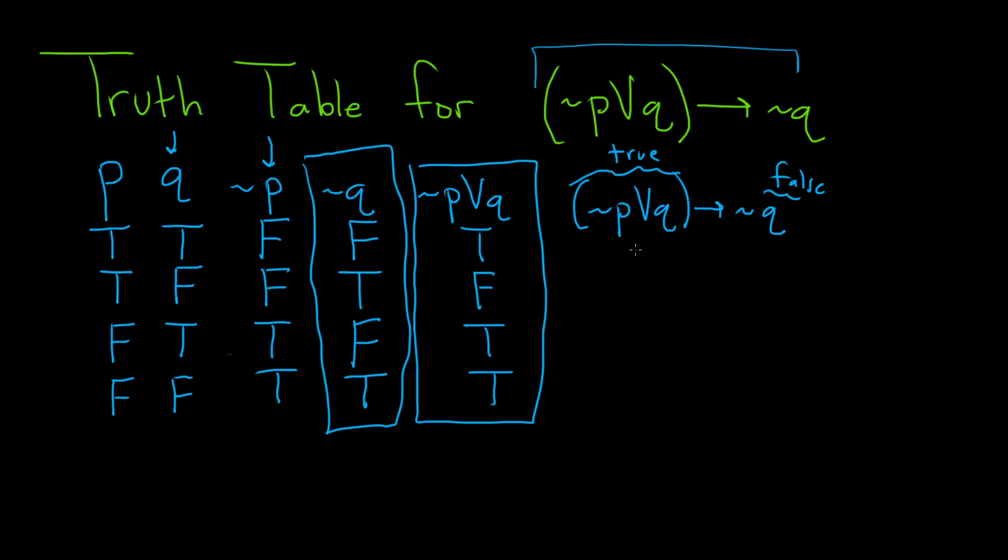So already, we're at that case where it's false, right? The first one is true, the second one is false. Here, it's going to be true. Here, the first one is true, the second one is false, so it's false. And then here, it's going to be true. And that completes the truth table.